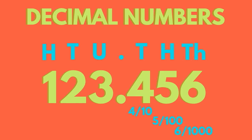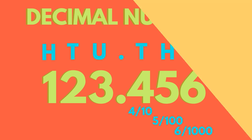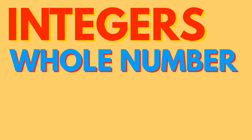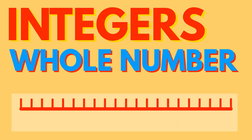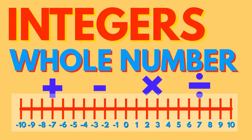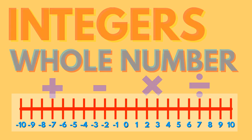An integer is a number which is not a fraction — it's a whole number. Let's think of them on a number line. Integers can be both positive and negative whole numbers. When we apply the basic operations to them, it's easy to become confused, but using a number line and knowing some useful rules can help us get it right.